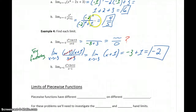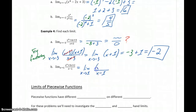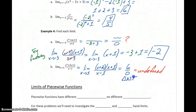For a rational function: try direct substitution. If we get a real number, we're done. If we get a 0 in the denominator, we want to try factoring to see if that term can cancel. Here, plugging in x = 1 gives us 1 - 1 = 0 in the denominator. We rewrite it as the limit as x approaches 1 of (x - 1) in the denominator over (x + 2)(x + 1) in the numerator — nothing cancels. Substituting still gives 3 × 2 over 0, which is undefined, so the limit does not exist.